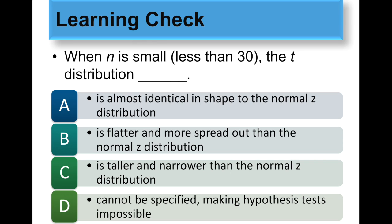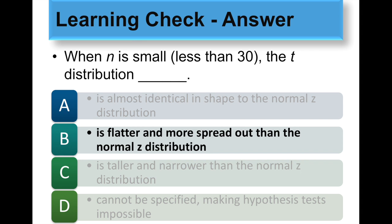When the sample size is small — less than 30 — the t distribution is flatter, almost like someone is pushing on the top of the distribution. It's more spread out and the tails are going to be thicker. It's just flatter than the z.